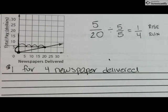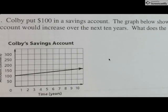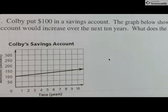So, let's look at Colby in the next one. Colby puts $100 in a savings account. The graph below shows the amount in the account would increase over the next 10 years. What does the Y intercept represent?